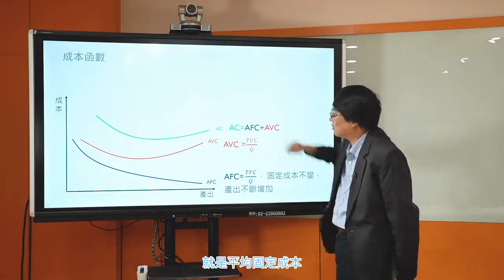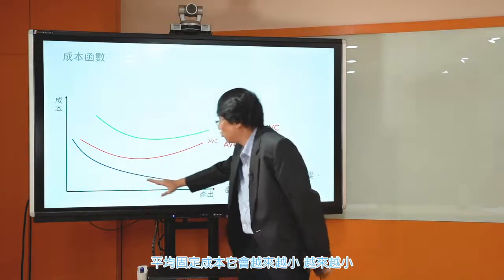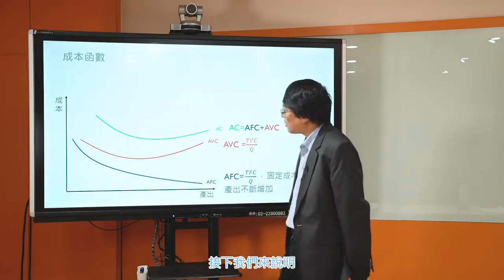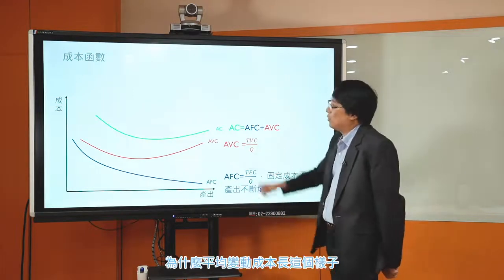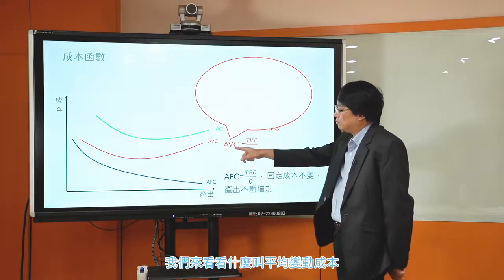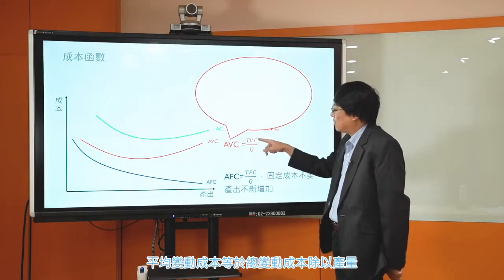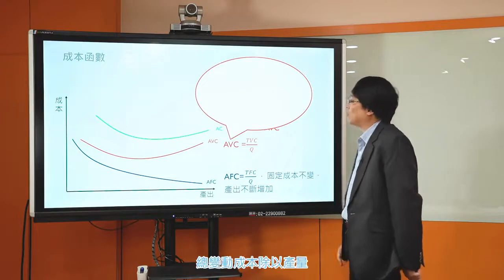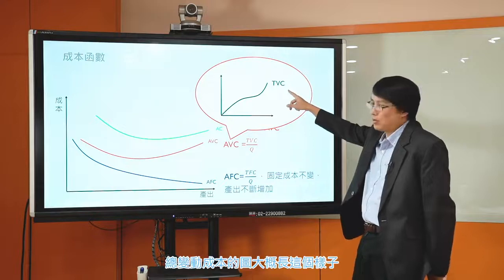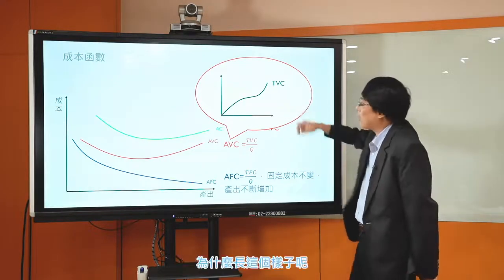平均变动成本大概长这个U形的样子，为什么待会跟大家说明。平均成本等于平均固定成本加平均变动成本，所以平均成本曲线在平均变动成本曲线的上方，两者之间的距离就是平均固定成本。随着产量增加，平均固定成本越来越小，所以平均成本曲线和平均变动成本曲线之间的距离会越来越小。